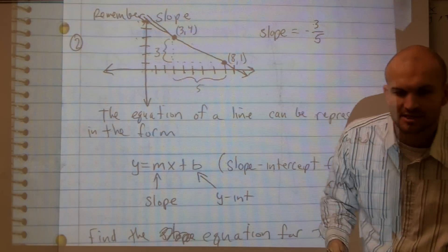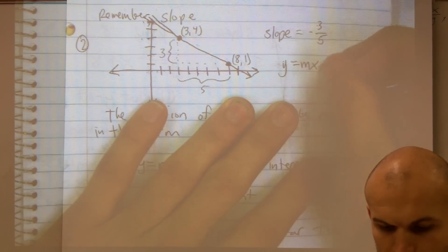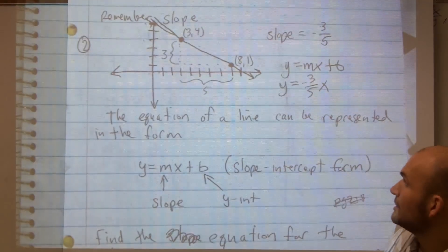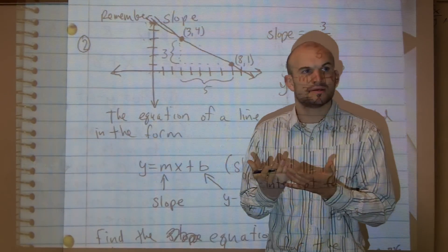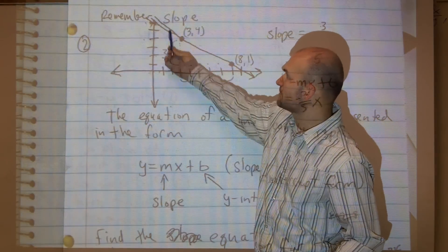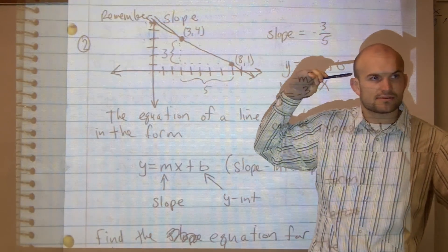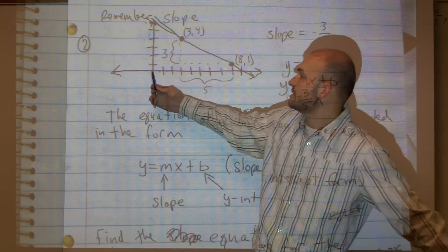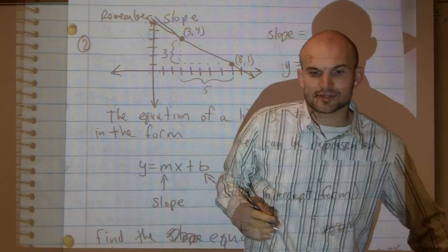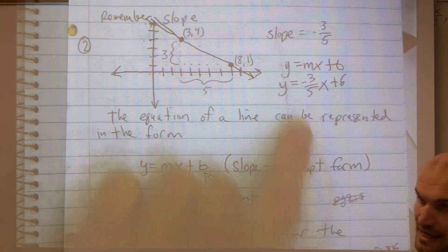Now, to find my y equals mx plus b equation of my line, which we call the slope intercept form, I know my slope is y equals negative 3 fifths x. But what I need to do is determine what is my y intercept, because it's mx plus b, and b represents your y intercept. So I look at this graph — where does it look like it crosses the y axis? You can count all the way up: 1, 2, 3, 4, 5, 6. Yes, very good. The y intercept is at 6. So my equation in slope intercept form is y equals negative 3 fifths x plus 6.